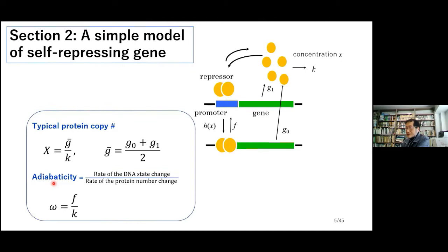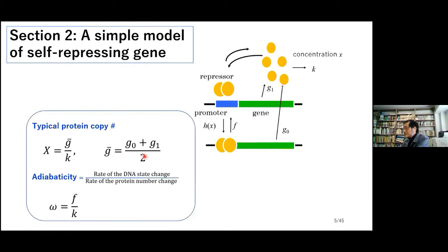In condensed matter, a certain degree of freedom — like the electronic or spin degree of freedom — may vary on a very short timescale compared to other atomic degrees of freedom. Such fast-varying degrees of freedom can be regarded as being in quasi-equilibrium. So when omega is large, the repressor binding status of DNA can be regarded as in quasi-equilibrium. We will see how the system behavior changes when X or omega are varied.